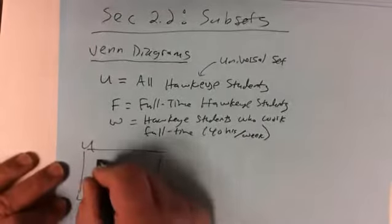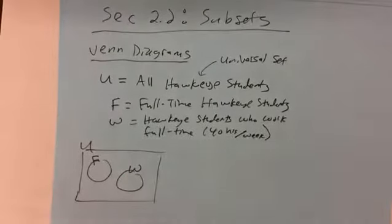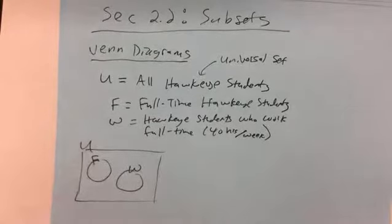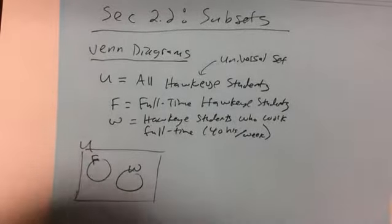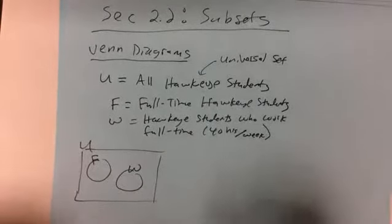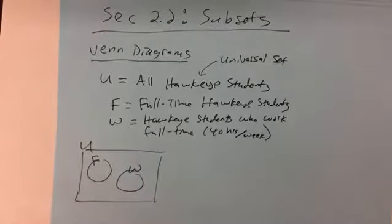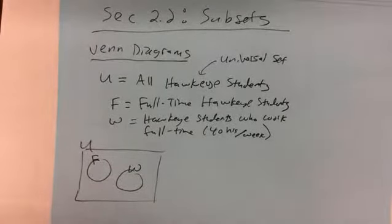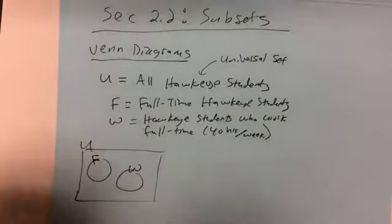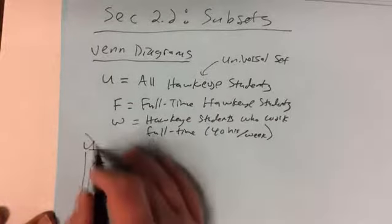Let me give you some possible examples of how these sets relate. One diagram might show set F and set W as completely separate — no students in common; you either work full-time or go to school full-time, but nobody does both. But that's likely wrong, since some students do both.